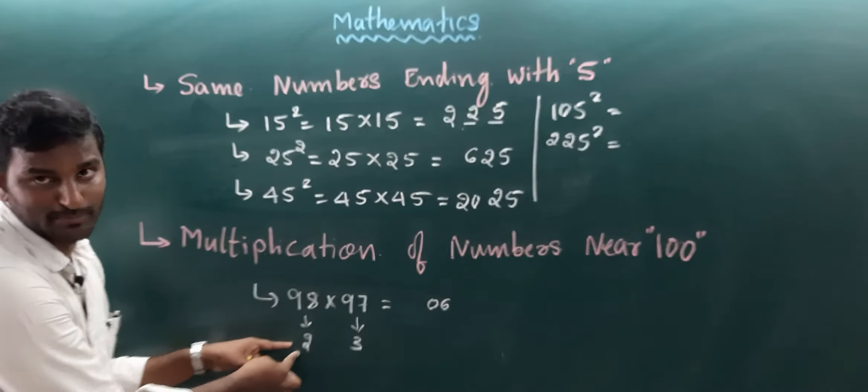And the next one, the multiplication of numbers near 100. So let us take the first one. So there is a 98 into 97. And what is the difference? What is the difference between 97 and 100? So there is a 3. And what is the difference between 98 and 100? So the answer is 2. So what is the answer for 98 into 97? It is very simple. So that is a 2 into 3. The last number is always 6. You are getting a 6. But you have to write the 2 digits. Hence, I am taking the 0. Hence, then doing the rest, 97 minus 2. So always it is 95. Otherwise, you can also do 98 minus 3.